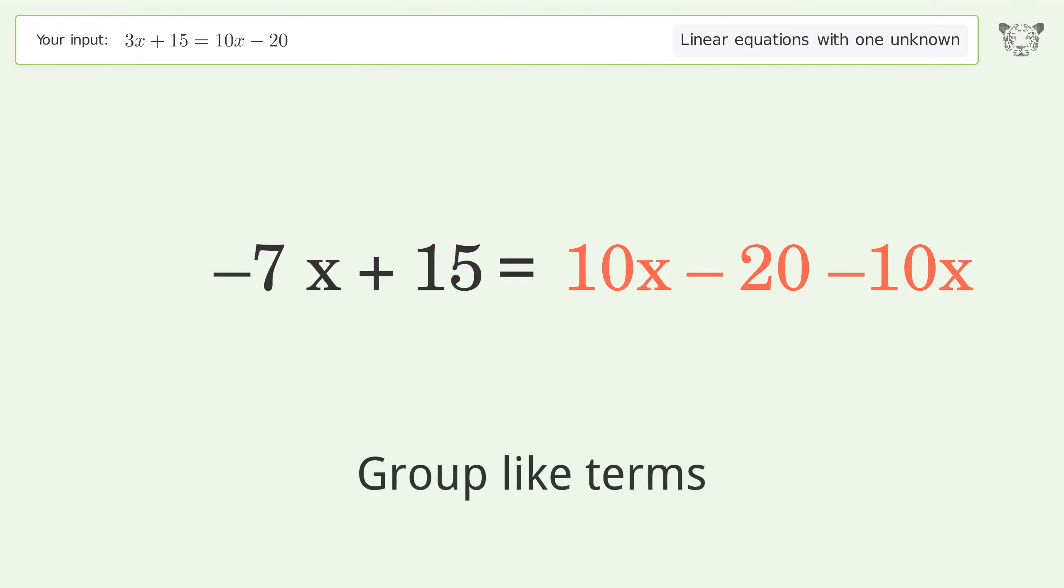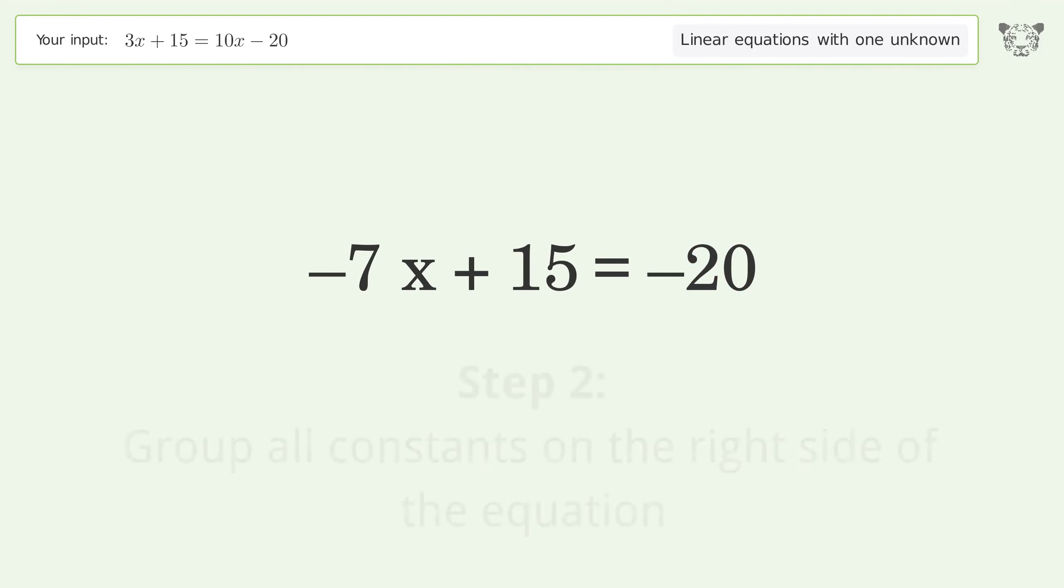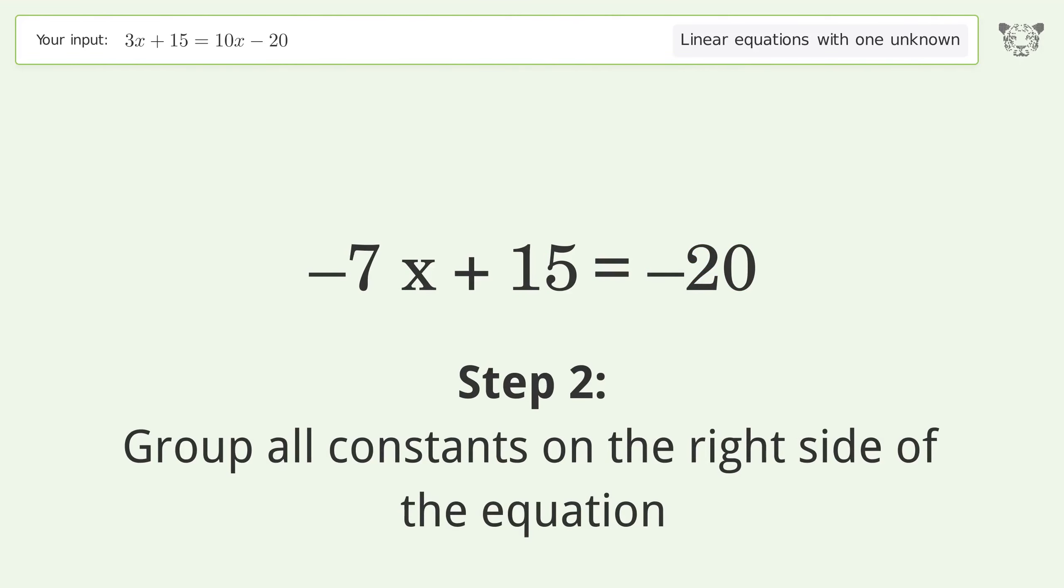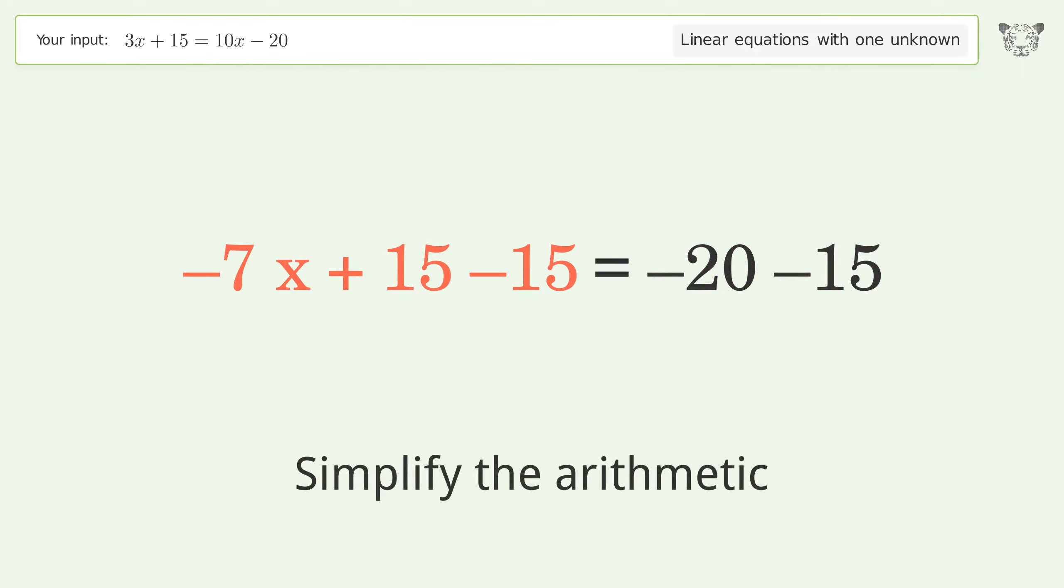Group like terms. Simplify the arithmetic. Group all constants on the right side of the equation. Subtract 15 from both sides. Simplify the arithmetic.